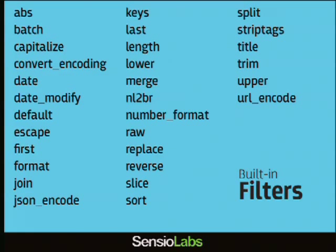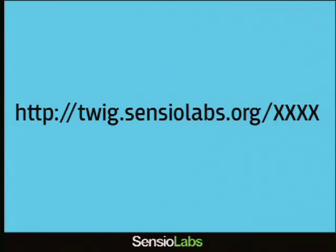To sum up: a filter is something you can use to modify a variable, to modify something going to be output to a user. Here you can see all the built-in filters we have in Twig. You can add more — it's quite easy, but you need to write some PHP code. A small tip: whenever you want to know something about a filter, tag, or operator, you can go to twig.sensiolabs.org and then replace xxx with the name of the filter, and you'll be redirected to the right documentation page.